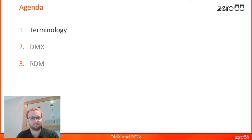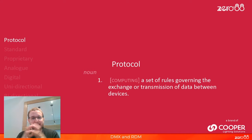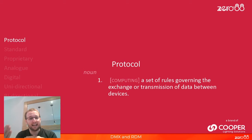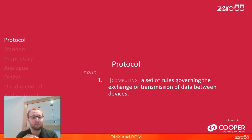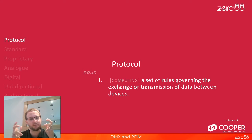First of all, terminology. Protocol — a protocol is a set of rules about how one thing can talk to another thing. For example, if you were to go in to see the Queen, there is a protocol: there is a way you have to act, a way you have to behave, a way you have to address the Queen. And we do exactly the same in lighting. There are sets of rules about how a lighting console can talk to a light, and if they both follow those rules, they should be able to talk absolutely fine.